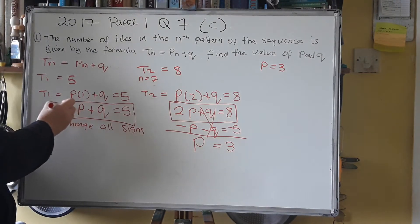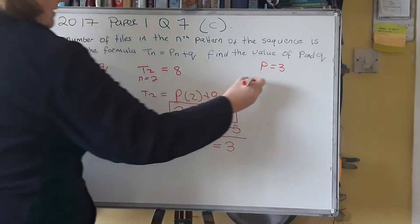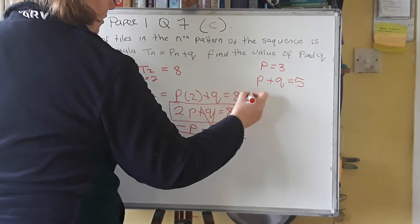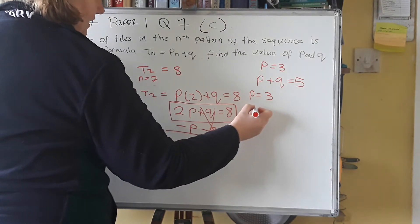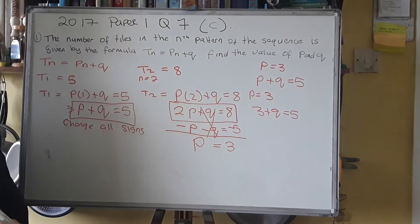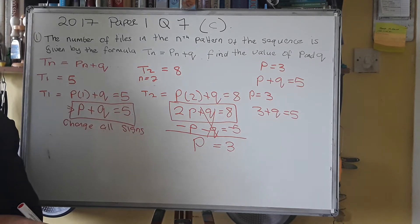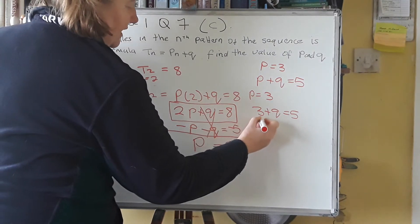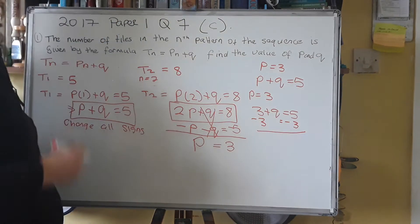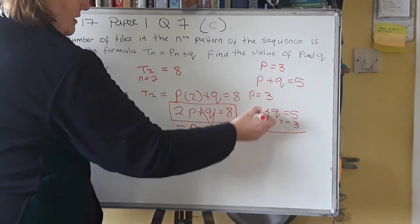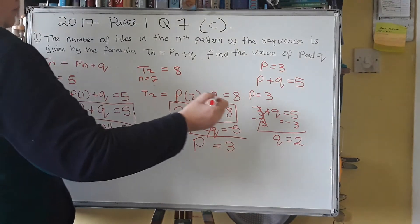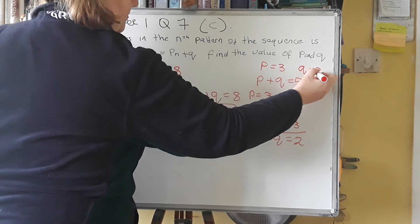So knowing that, you can go back to this one here, before you changed all the signs. So P plus Q equals 5. And instead of P, we now know that P is 3. So that's 3 plus Q equals 5. Now you can probably see at this stage what you add to 3 to get 5. You add 2 to it. But if you're not sure, or if it's not that obvious, take the 3 from that side. Remember, whatever you do to one side of the equals, always do to the other to keep the balance. And so that's gone, and you're left with Q equals 5 minus 3, which is 2. So your P is 3 and your Q is 2.